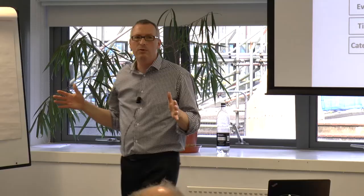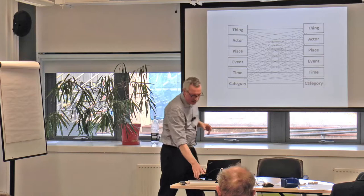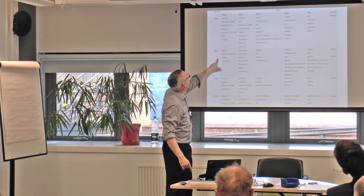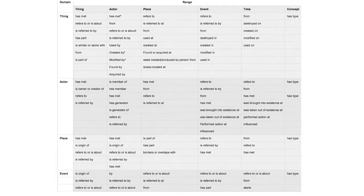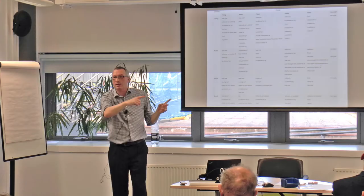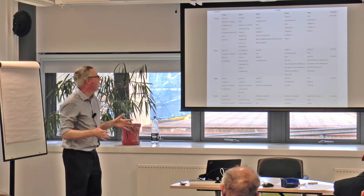The CIDOC CRM has over a hundred relationships that we use. We abstract them down to a matrix with relationships: a thing refers to a place, a thing is from an event, was created from an event, or was destroyed in an event. These matrices give us much more control, precision, context and meaning, so that we can answer some of the questions asked as part of our research.